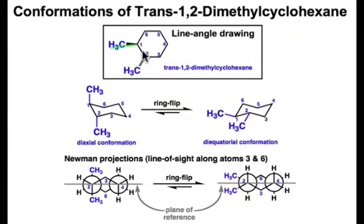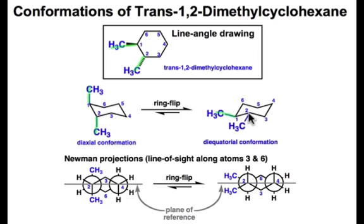Here's the trans isomer, and when we look at this in three dimensions, we can notice that there are two ways to arrange the methyl groups with the trans relationship: both could be axial, as shown here, or both could be equatorial, as shown here. It's clear that one is up and one is down in the di-axial conformation, but you'll need to take a close look at the di-equatorial conformation to convince yourself that it's trans.